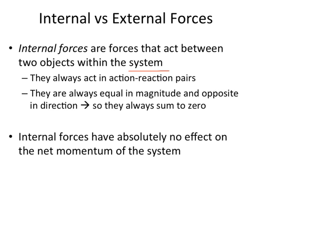Let's say we have a surface with two boxes adjacent to each other — box one and box two, maybe different sizes. Box two is applying a contact force to box one, and box one is applying a contact force to box two. They're pressed together, so there's a force between those boxes. Contact force from two to one, and contact force from one to two. You can have those forces and still have the system not move. These are what we call internal forces: forces that exist between two objects.